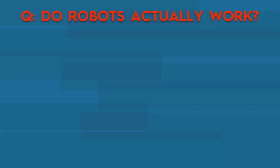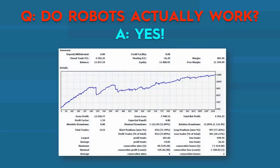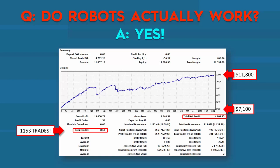Do robots actually work? Yes, of course they do. Here are my statements. Statement number one: I started with $7,100 on this account, which grew to $11,800 — a total net profit of $4,700 over a period of about three to six months. The most interesting part: there were 1,153 trades. There is no way on planet earth I could have conducted 1,153 trades manually. This was a forex robot trading on my account.